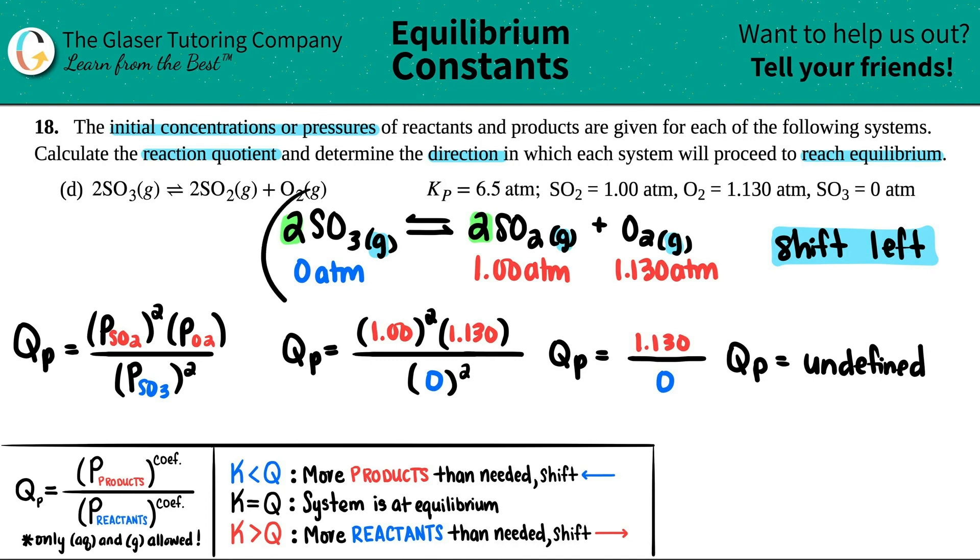Mainly because you have no starting material. So generally speaking, when you have no starting material, the Q value is always going to be undefined. All right, and then we gave the direction before - you're going to shift left because you have nothing to start with, so you gotta get it back. Hopefully this helped. Thank you so